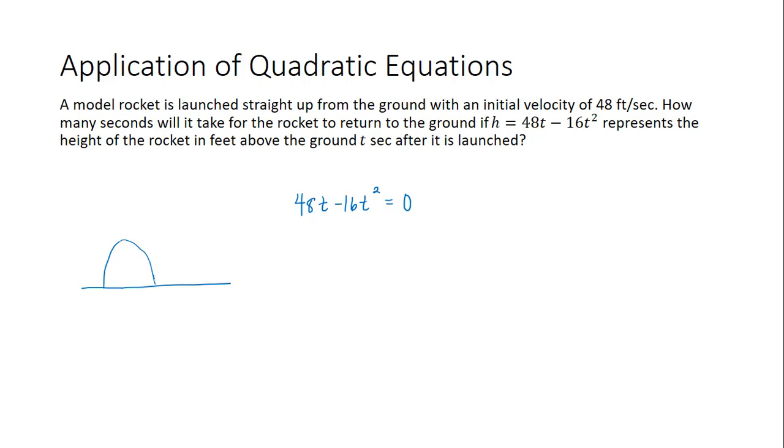So this equation can really be written in standard form as negative 16t squared plus 48t is equal to 0. This is just a binomial with a common factor of negative 16t.